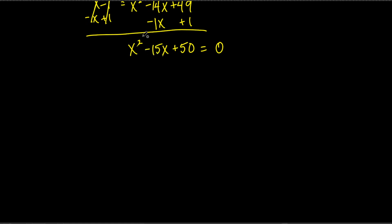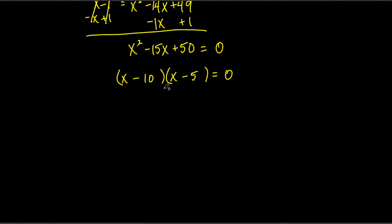We're not finished — we've got to solve for x. This is a quadratic. You could use the quadratic formula, but I look at this and say: this can factor. 5 times 10 is 50, and negative 5 plus negative 10 is negative 15, so this factors. Negative 10 times negative 5 is positive 50. Negative 10 plus negative 5 is negative 15, which is this middle term. So the factored form is x minus 10 times x minus 5.